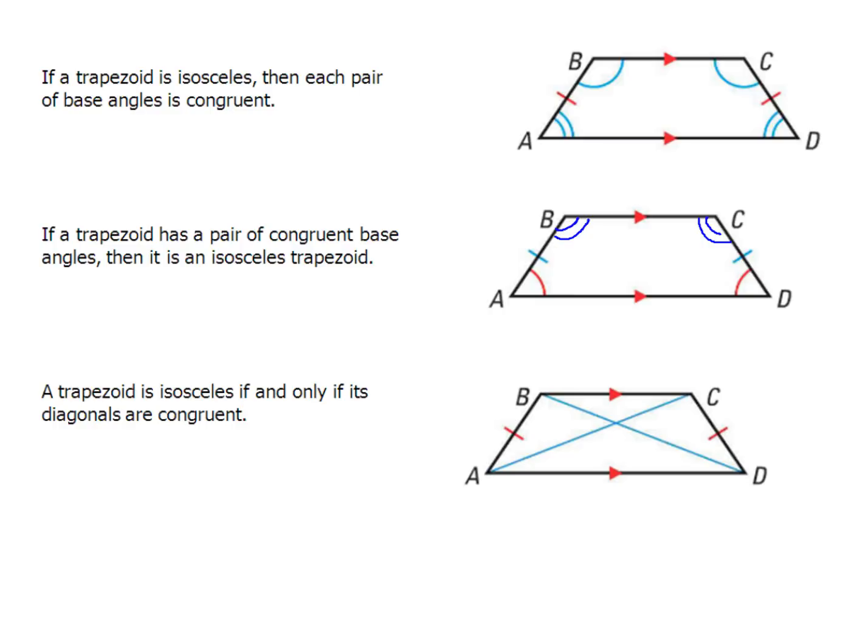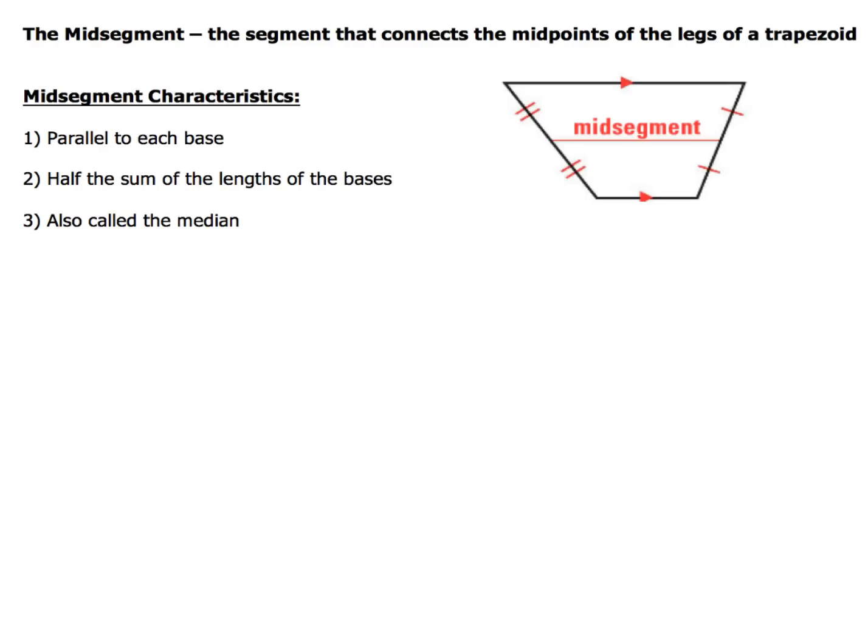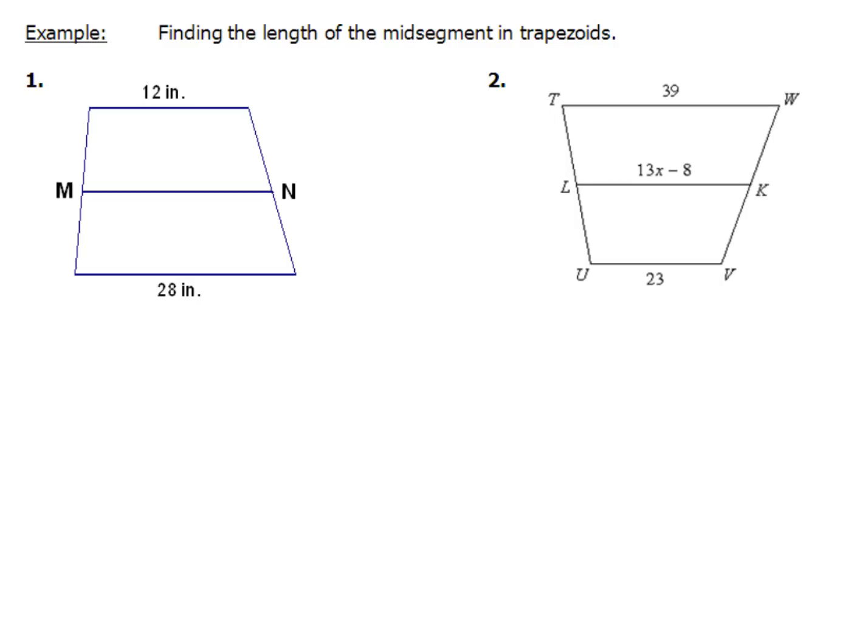Now let's take a look at one other special part of the trapezoid, and that's going to be the mid-segment. The mid-segment is the segment that connects the midpoints of the legs of a trapezoid. There are three characteristics of the mid-segment. The first is that it is parallel to each base. And don't forget the bases: one is down here and one is up here. The mid-segment is also half the sum of the lengths of the bases, and we'll practice this in a moment. But in some textbooks, they might call the mid-segment the median. So just be aware of that.